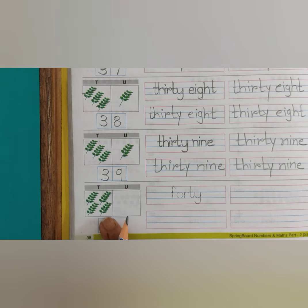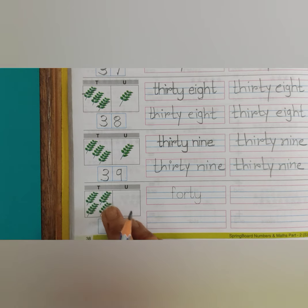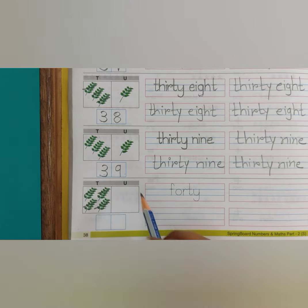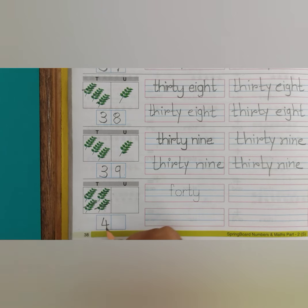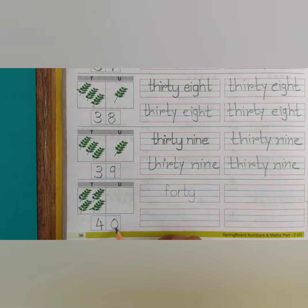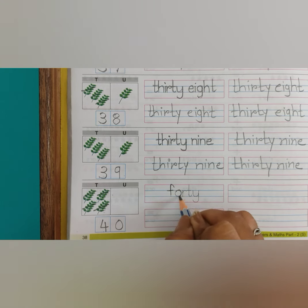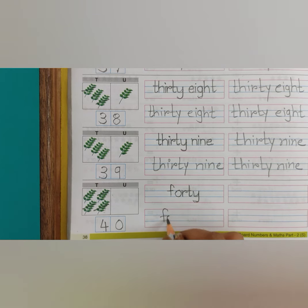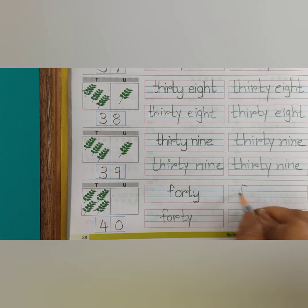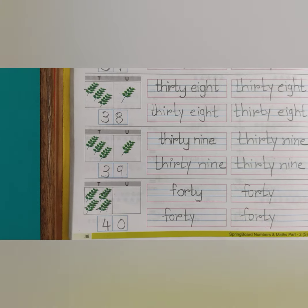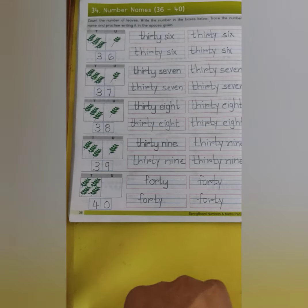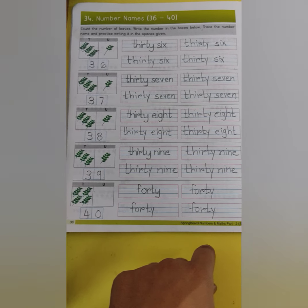अब हम यह leaves काउंट करेंगे. तो यहाँ पे 10 के 4 ग्रूप है: 1st, 2nd, 3rd और यह भी 10 का ही है, यह 4th. तो 10 के कितने ग्रूप है? 1, 2, 3, 4. तो 10s में हम 4 लिखेंगे. और यूनिट्स में एक भी leaves नहीं है, तो यूनिट्स में हम 0 लिखेंगे. 4, 0 — 40. तो इस तरह से आपको यह पेज complete करना है.